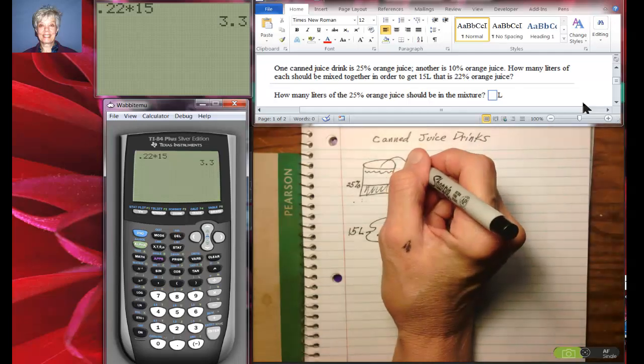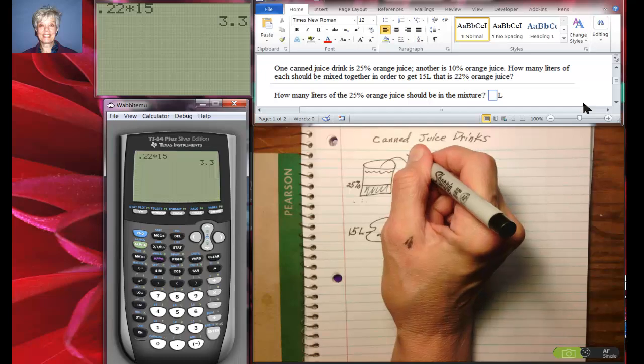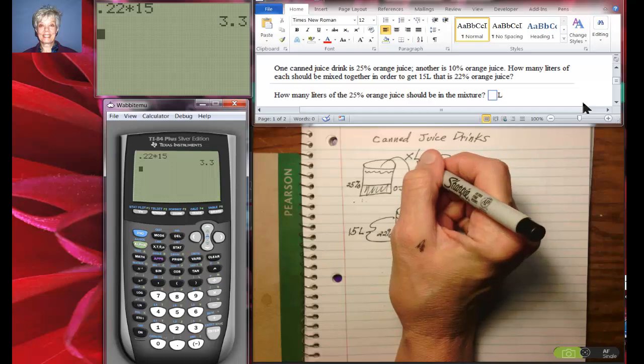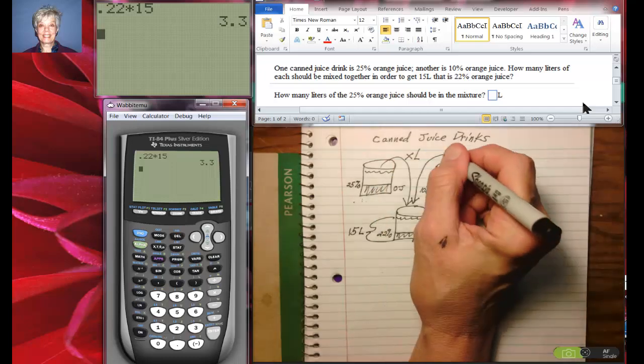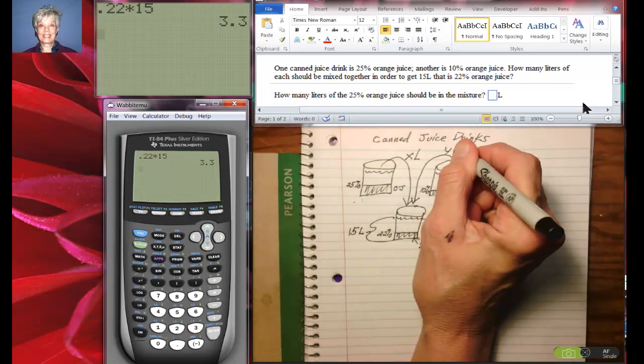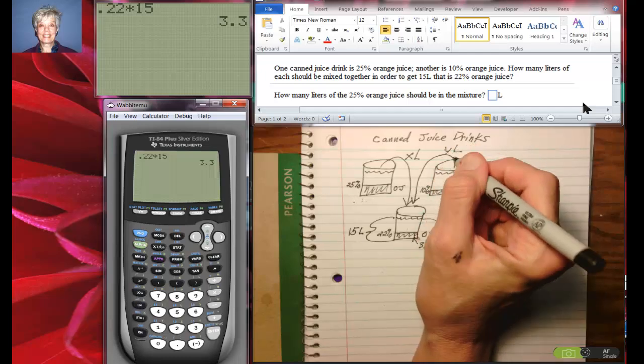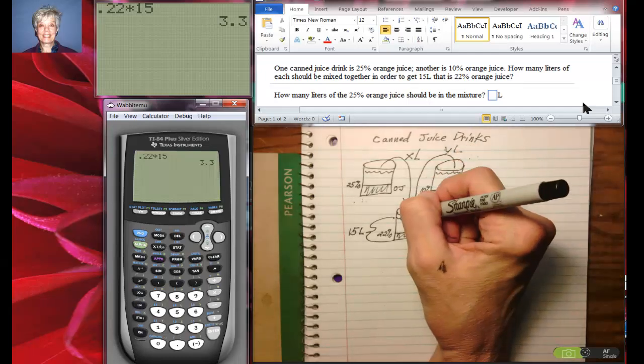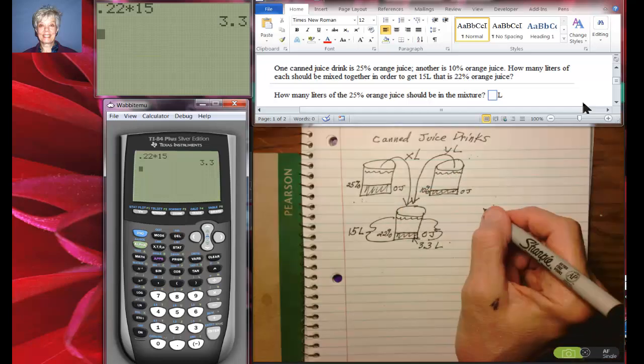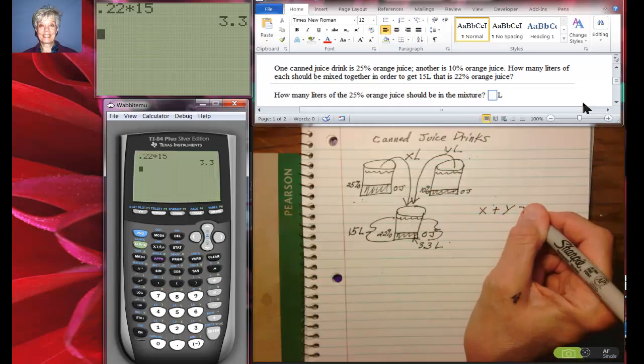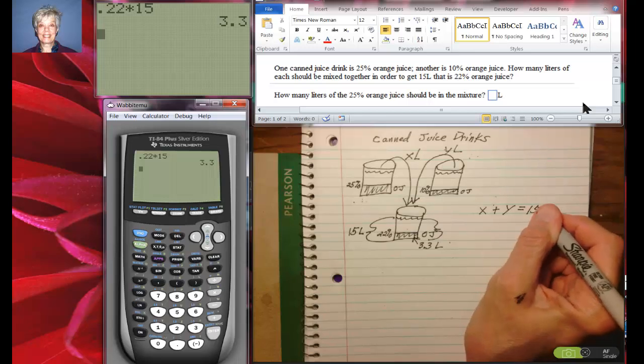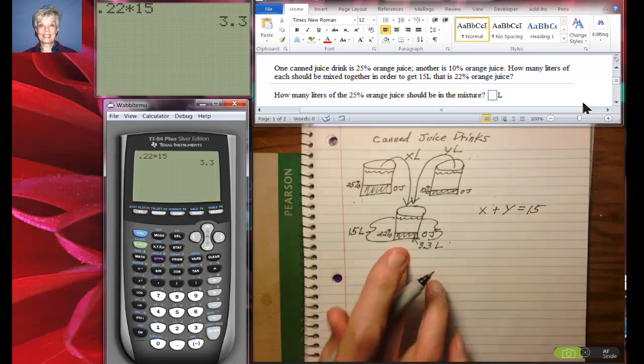So let's say I put x liters of this liquid and y liters of this liquid into here. So that the x liters and y liters together equal the 15 liters that we'll get at the end.